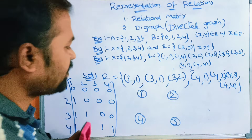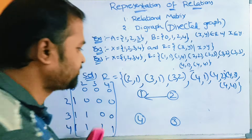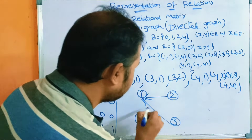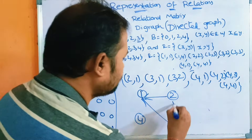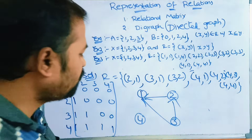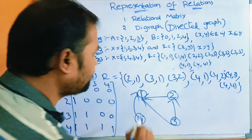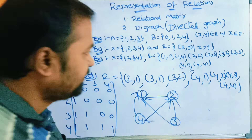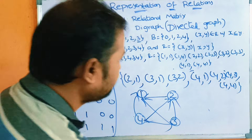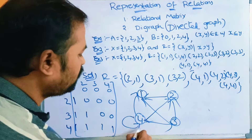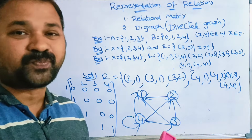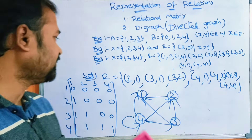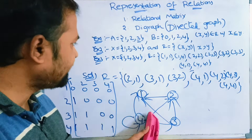Now constructing the digraph for Example 2 with vertices 1, 2, 3, 4. Draw edges: from 2 to 1, from 3 to 1, from 3 to 2, from 4 to 1, from 4 to 2, from 4 to 3. For (4,4), the source and destination vertex are the same, so this forms a loop. This is the complete matrix and digraph for this problem.